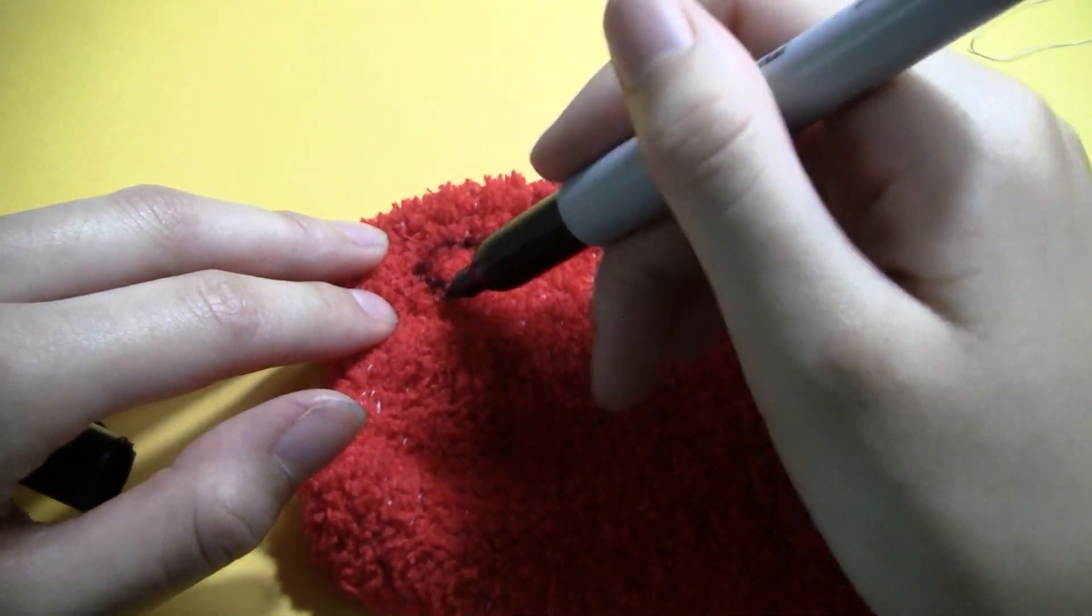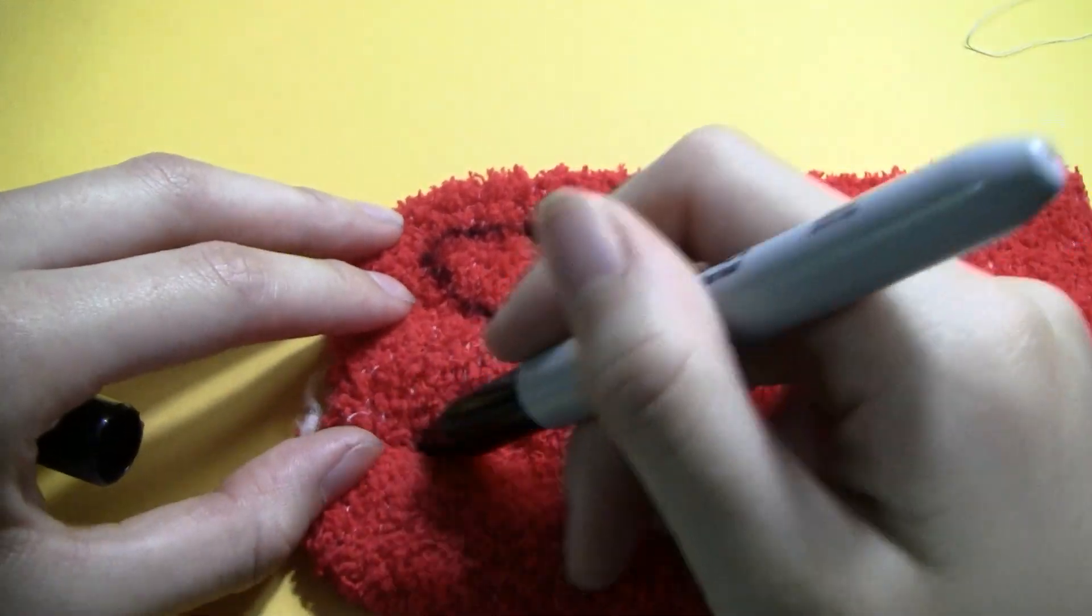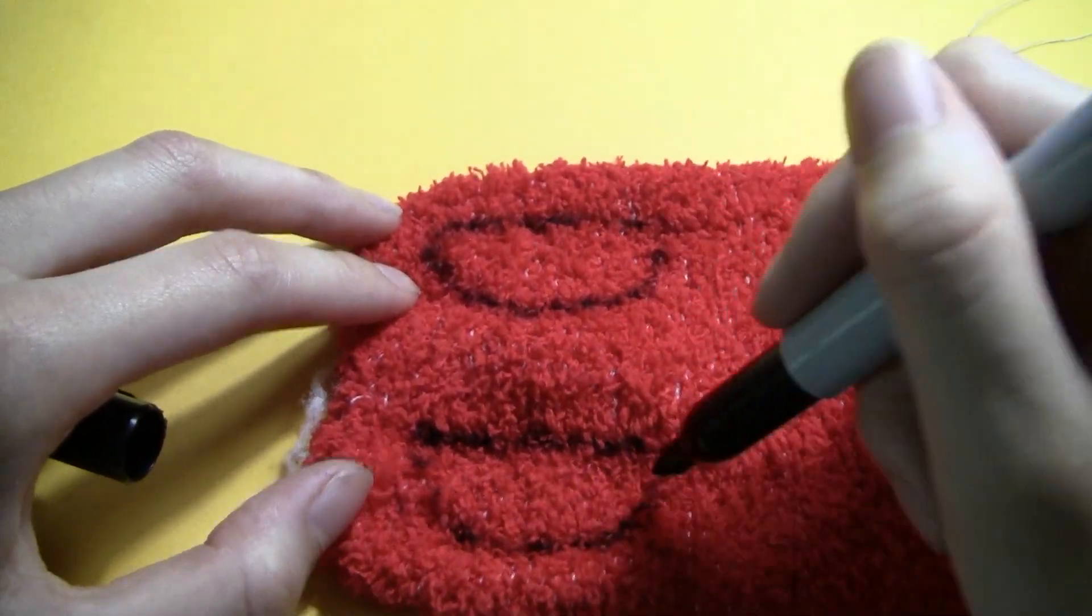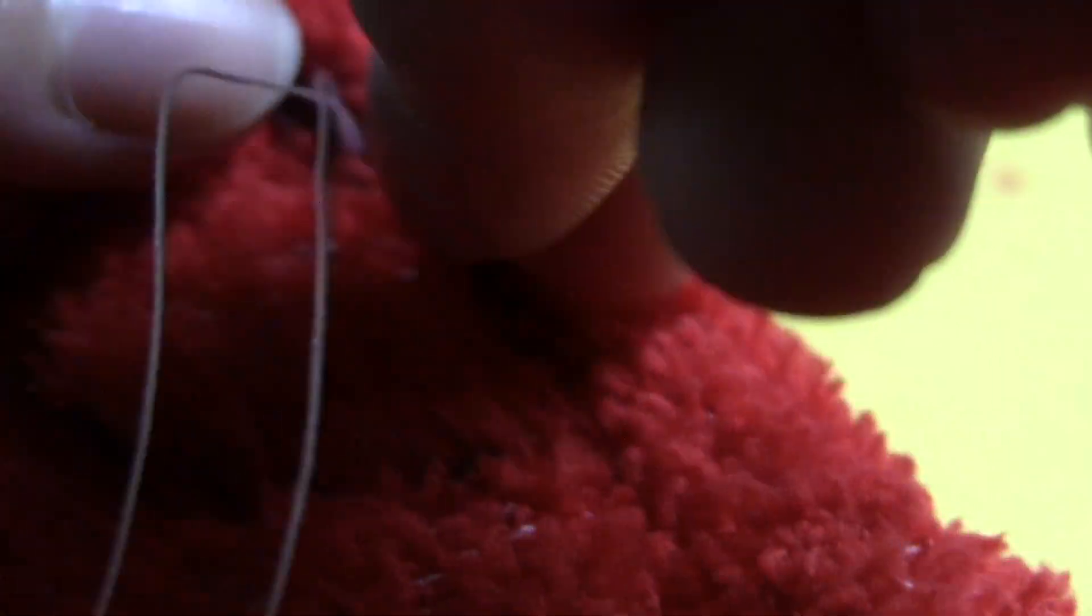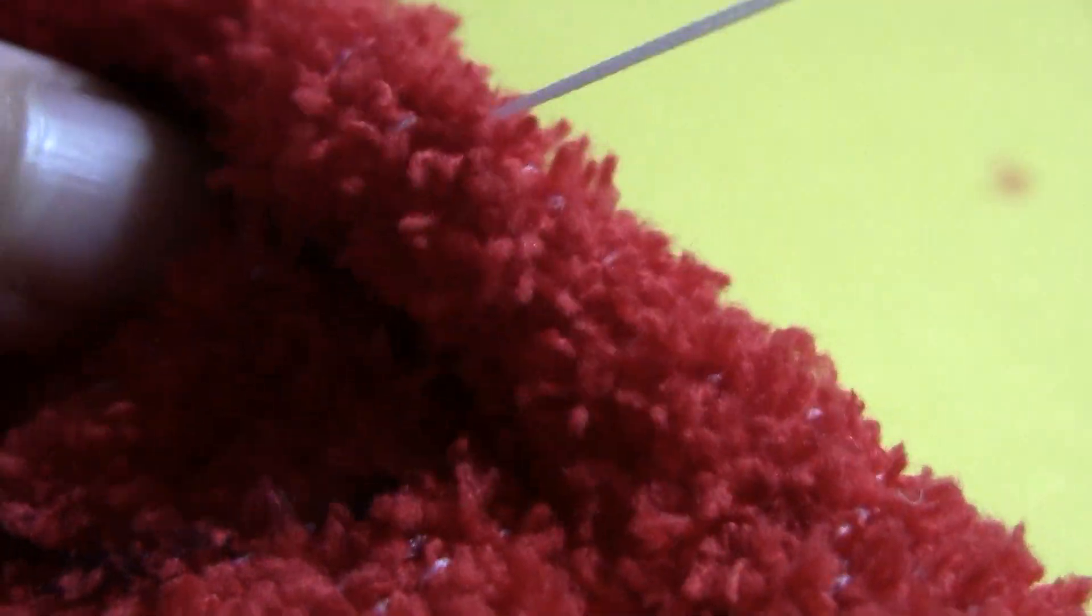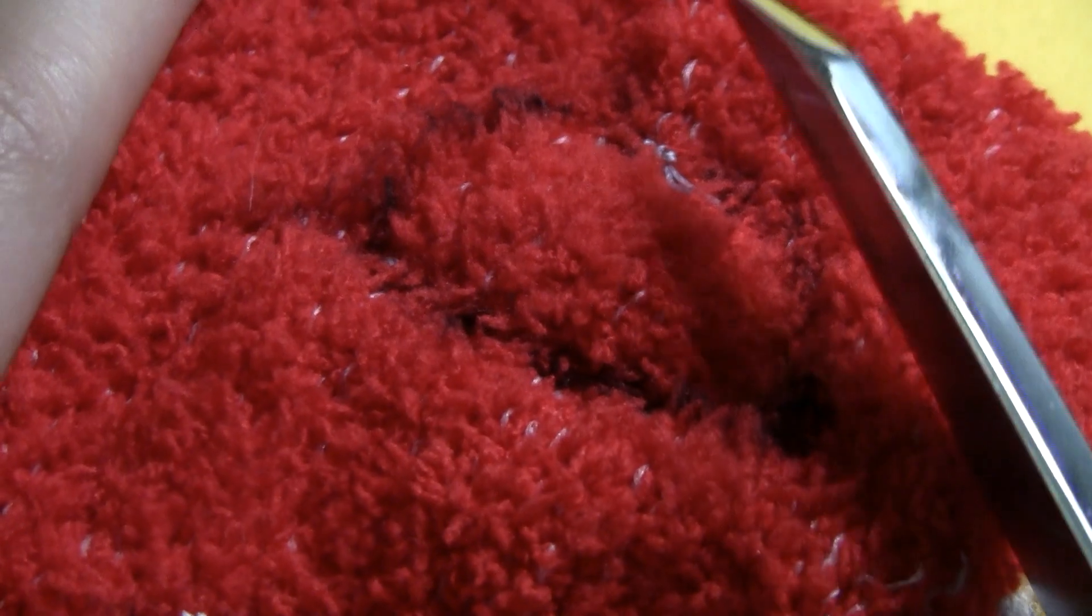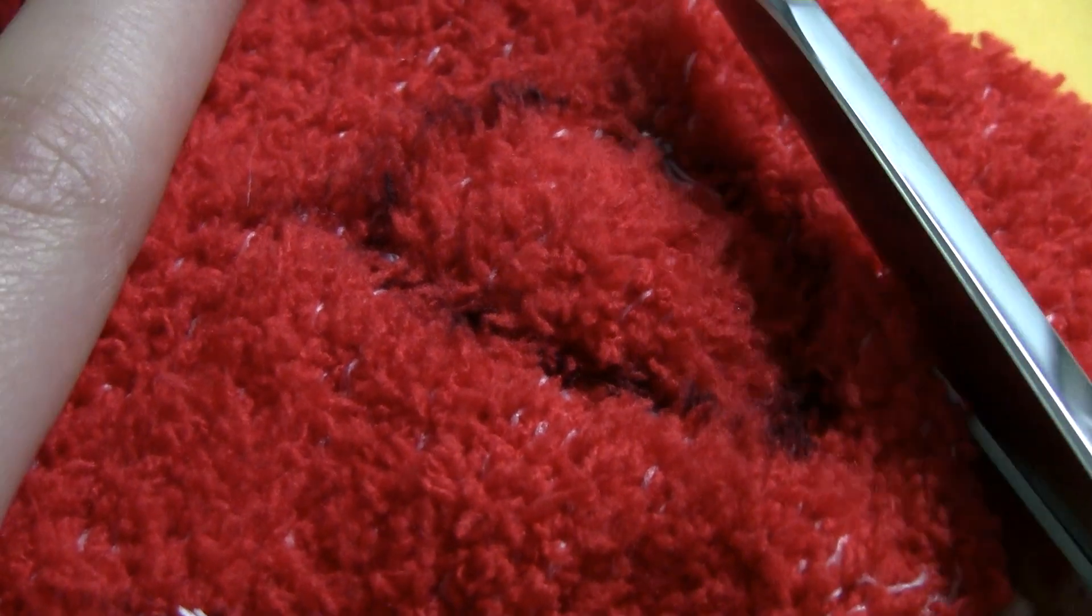Draw out two small wing shapes, slightly larger than the wings on my basic bird pattern. Backstitch around both of them, leaving a quarter of them open for turning. Cut them out, then turn them inside out and close it with a whip stitch.